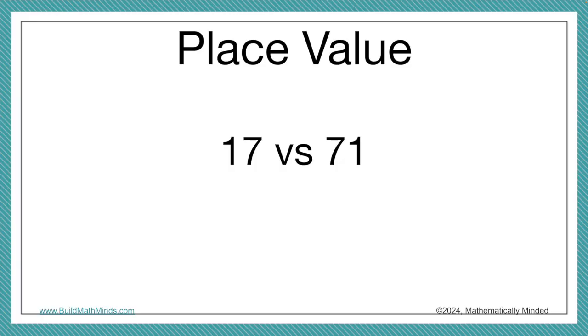So when it comes to place value, a common misconception that kids have is that they will have trouble with reversing numerals. For example, if the number is 17, they might want to write 7-1. Now the reason that this is an issue is because it really does get to the heart of kids not understanding what the number means and its value.